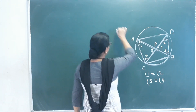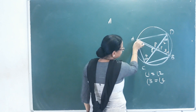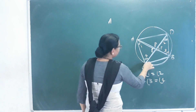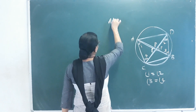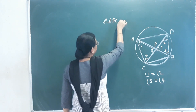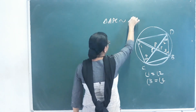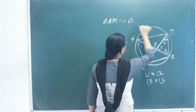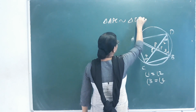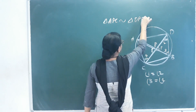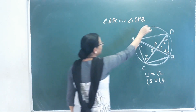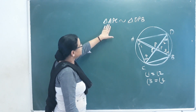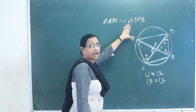Triangle APC is similar to triangle DPB. These two triangles are similar triangles.